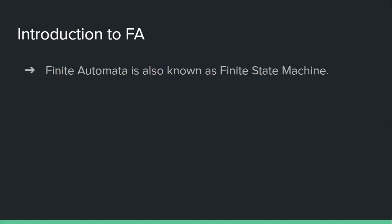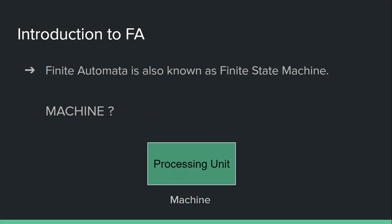Finite automata is also known as finite state machine. What is exactly this machine? You must have seen machines around you — every machine has a physical existence and some common principle on which it works. The common structure of a machine is a processing unit which takes some input and produces the desired output.